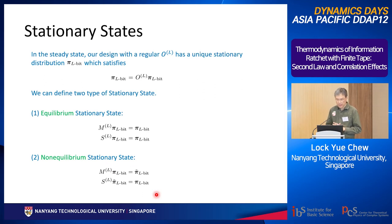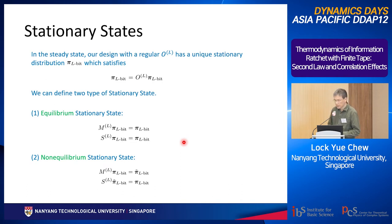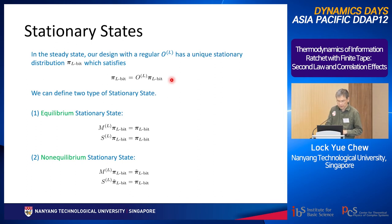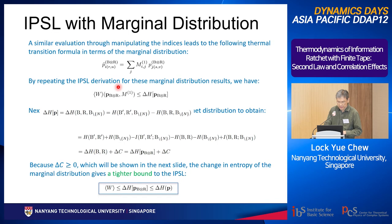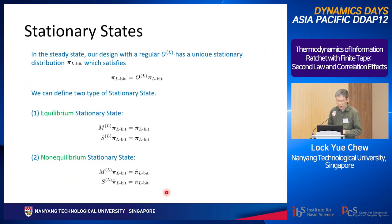Now I discuss stationary states. Our operator O has a unique stationary distribution at t → ∞ by design. When the system reaches the stationary distribution, ΔHP goes to zero. Based on IPSL, the work W must also saturate — either going to zero or going negative. There are two cases: the expected work goes to zero, or the expected work goes negative.